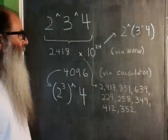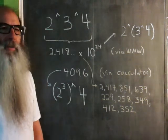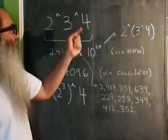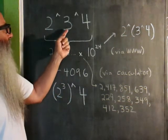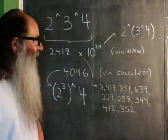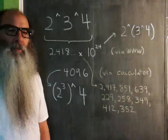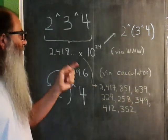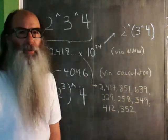If you go to some websites and you type in 2 caret 3 caret 4, 2 raised to the 3rd power raised to the 4th power, well, many websites report that equals 2.418 blah blah blah times 10 to the 24th power.